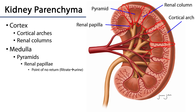These renal papillae therefore represent the point of no return at which the renal filtrate is unambiguously urine. So all processes of tubular resorption and secretion are finished at this point and this fluid is now urine.